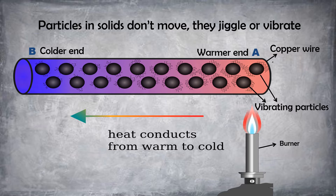The diagram here depicts a copper wire with two ends marked A and B. Since it is a solid, particles are not free to move — they can only jiggle or vibrate. When heat is supplied to end A, it becomes warmer and its particles start vibrating fast. They collide with other particles and transfer heat energy. The process continues until end B becomes warm. This is how conduction of heat occurs in solids.